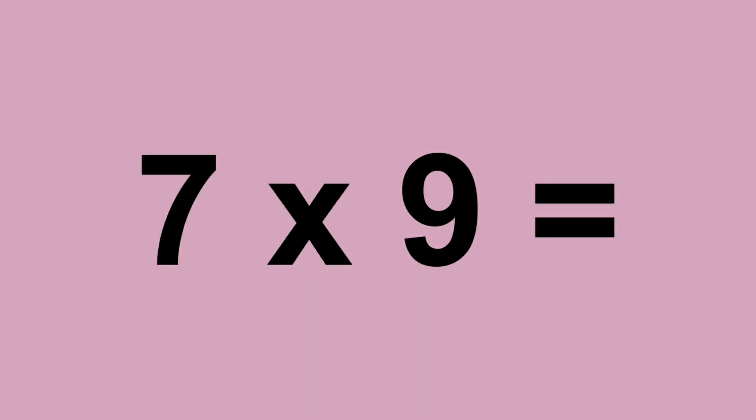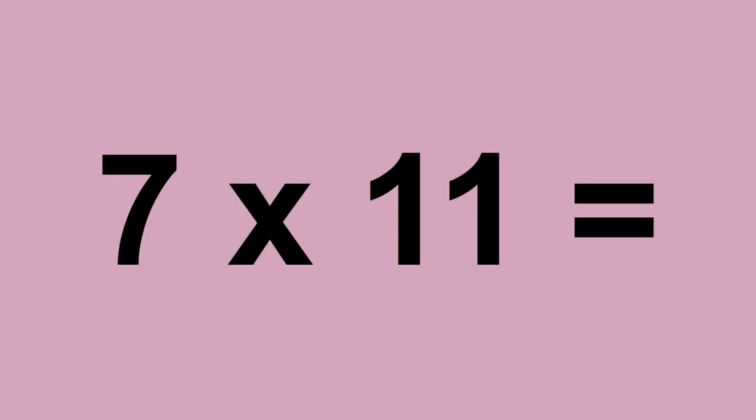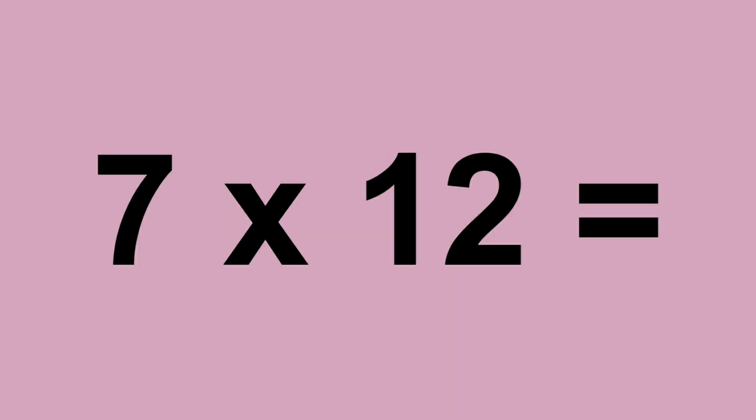Seven times nine equals sixty-three. Seven times ten equals seventy. Seven times eleven equals seventy-seven. Seven times twelve equals eighty-four.